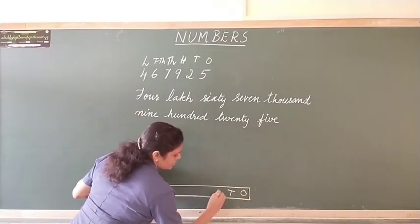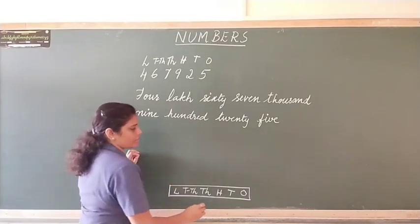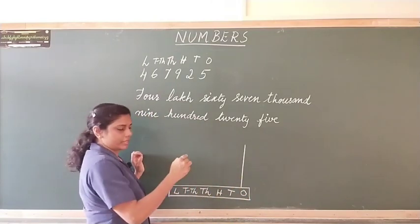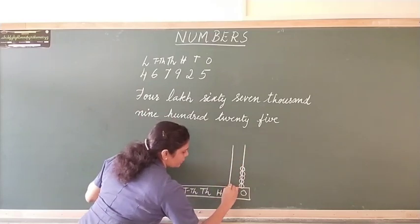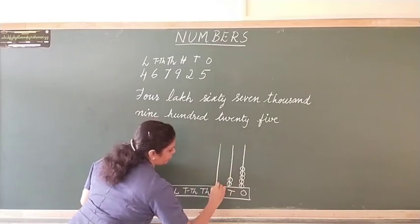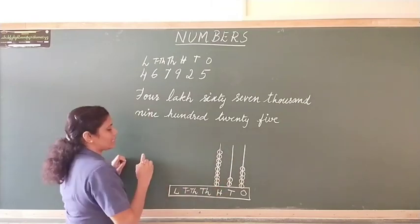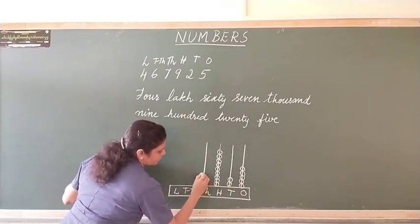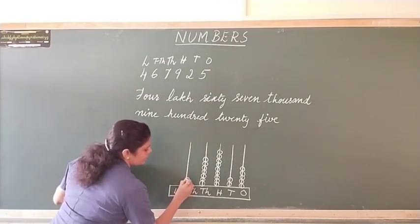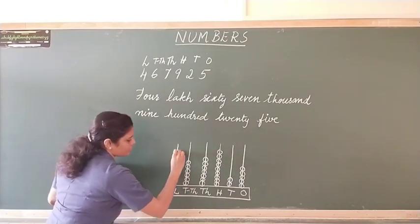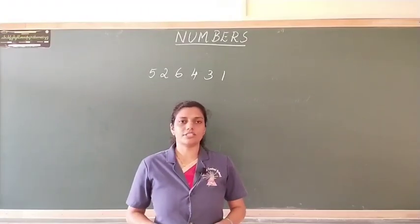Next, let me write the place values. We start with ones, tens, hundreds, thousands, ten thousands and lakhs place. Now, we start with the last digit, we write 5 beads on this. In the next place we have 2, so we draw 2 beads on this. Hundreds place we have 9, so we write 9 beads. Next is 7, so 7 beads. Again, in ten thousands place we have 6, so I draw 6 beads here. And finally, in the last place we have 4.